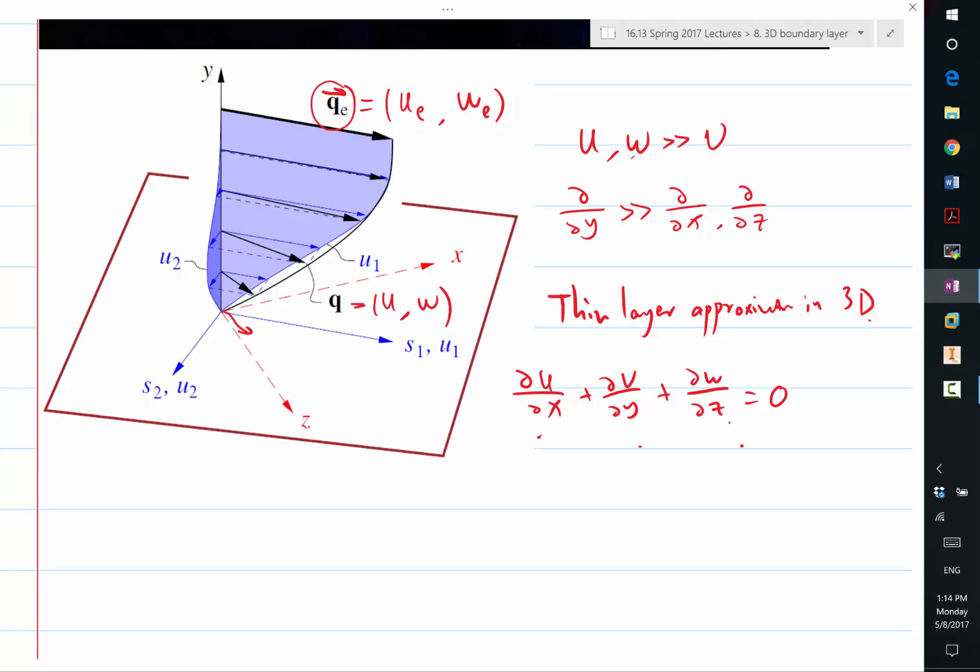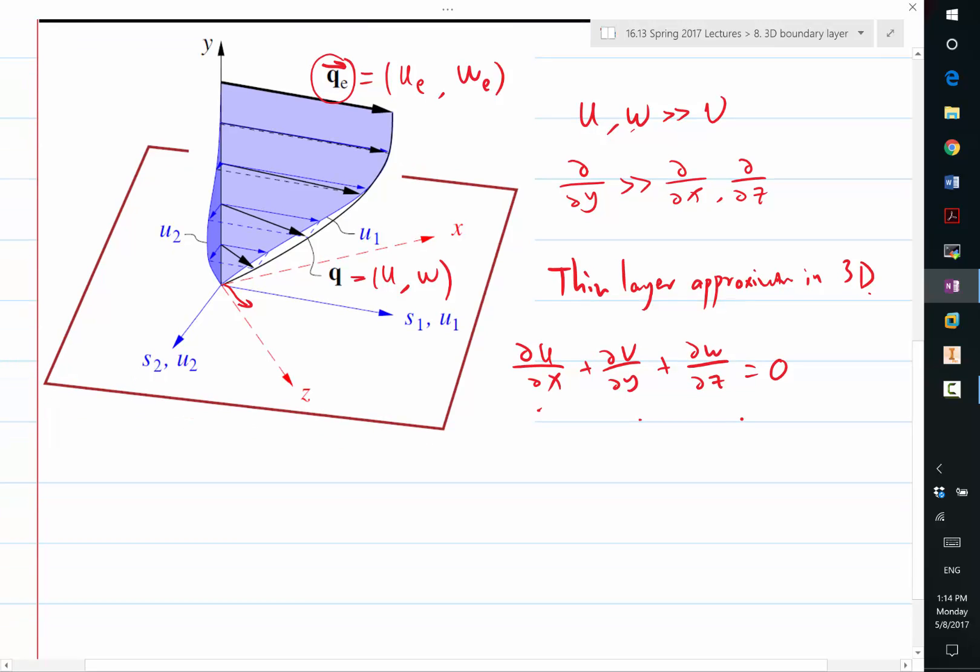Now, in the momentum conservation equation, in order to simplify it, we want to derive also what is the pressure gradient in the momentum conservation equation. And the pressure gradient, just like in the two-dimensional case, can be converted into a velocity gradient outside the boundary layer. Because just as in the two-dimensional case, the pressure variation inside the boundary layer is very small. The pressure variation when you go normal to the surface is very small because the v velocity is very small.